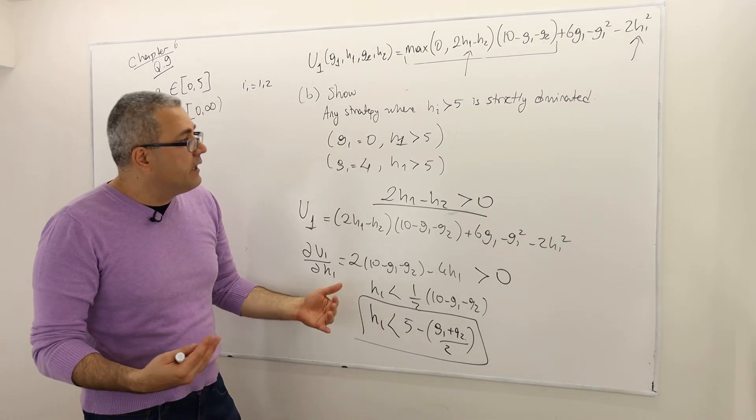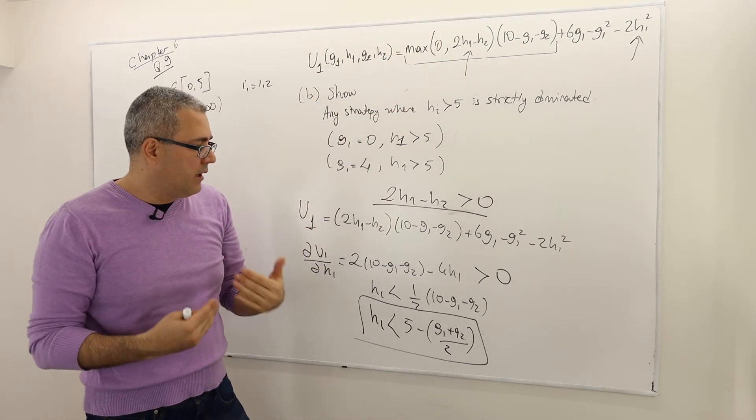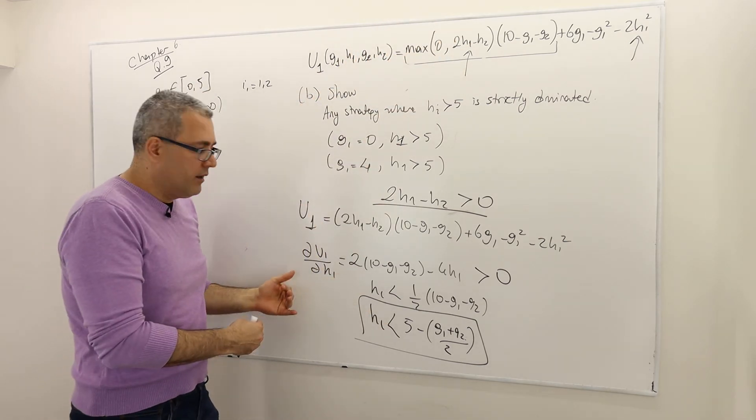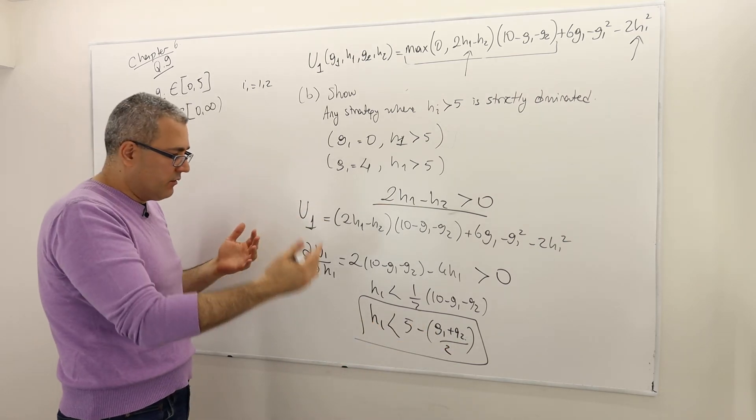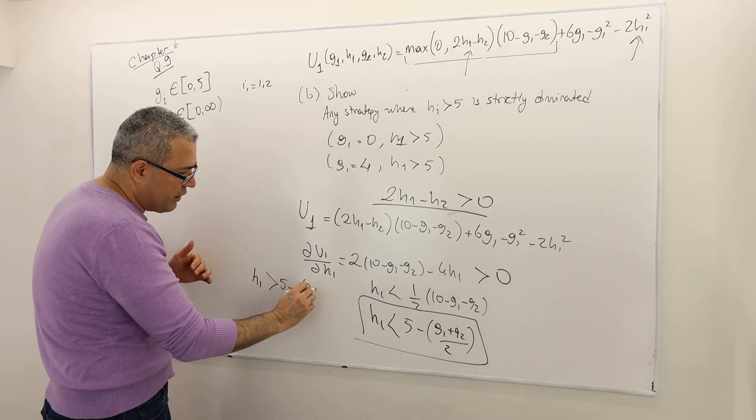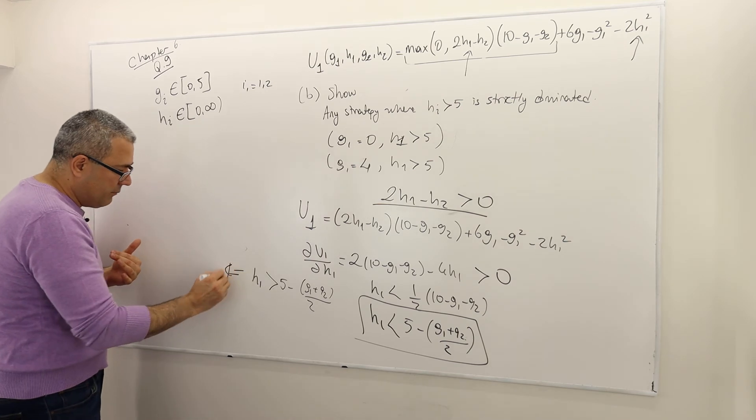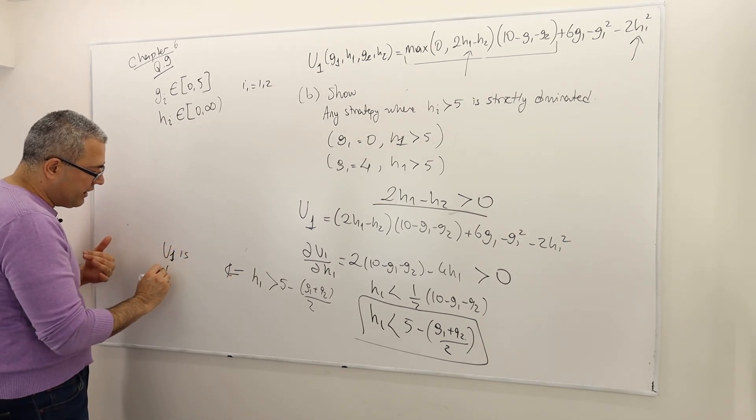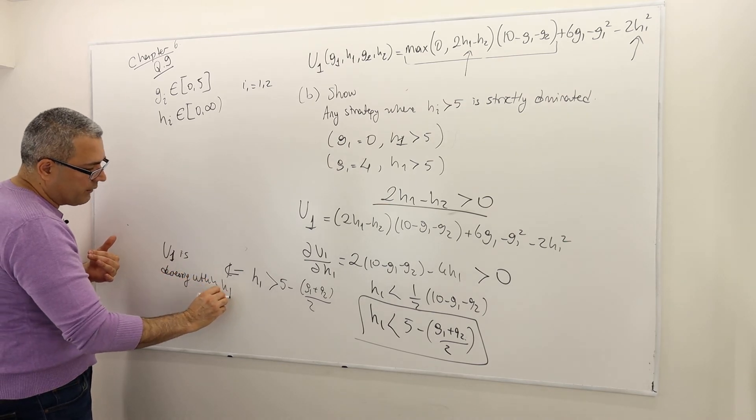So if H1 is less than 5, basically, it means this payoff will increase with H1. But if it is greater than this term, that means it's increasing. So if H1 is greater than 5 minus G1 plus G2 divided by 2, well, then it means U1 is decreasing with H1.